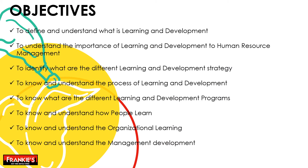Our key objectives: to define and understand what is learning and development; to understand the importance of learning and development to human resource management; to identify the different learning and development strategies; to know and understand the process of learning and development; to know the different learning and development programs; to understand how people learn; to understand organizational learning; and to understand management development.